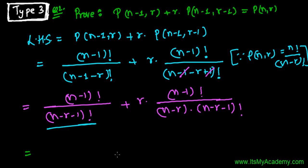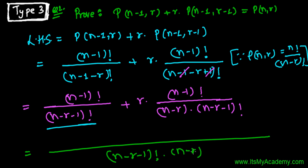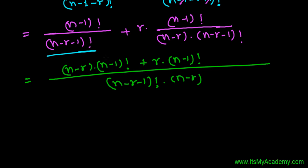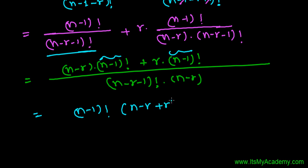Let's take the LCM as n minus r minus 1 factorial. So the first term becomes n minus r times n minus 1 factorial, and the second term becomes r times n minus 1 factorial. Now we can take n minus 1 factorial as a common factor outside from both terms, giving us n minus 1 factorial times the quantity n minus r plus r.